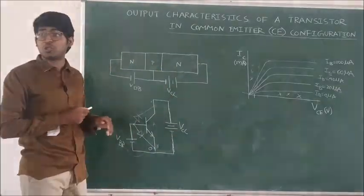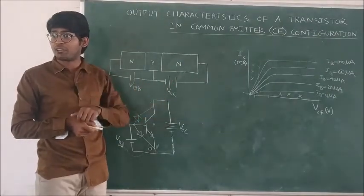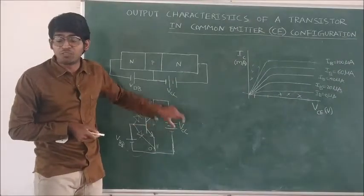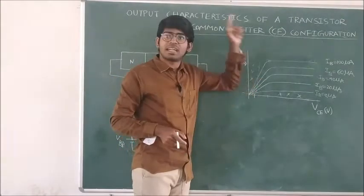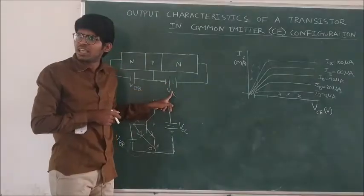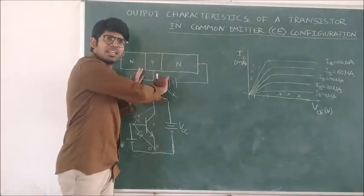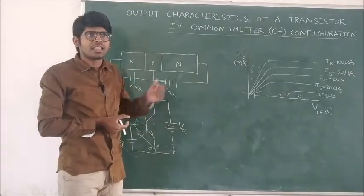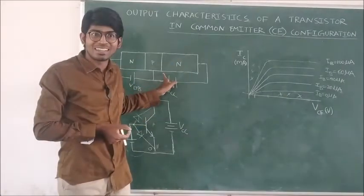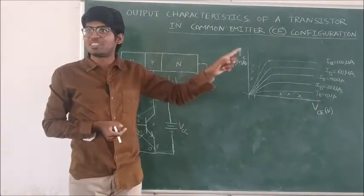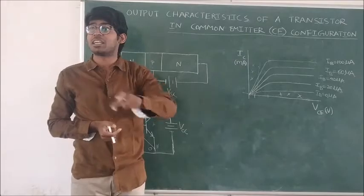We are not bothering about the input circuit, as we have already seen the input characteristics in the common emitter configuration. Now we are changing VCC. Whenever we increment VCC, the collector current increments. This collector-base junction is connected in reverse bias, and we are incrementing the collector voltage. The reverse bias current should not normally be affected by the applied voltage, but here when we increment VCC, the reverse bias current is getting affected.